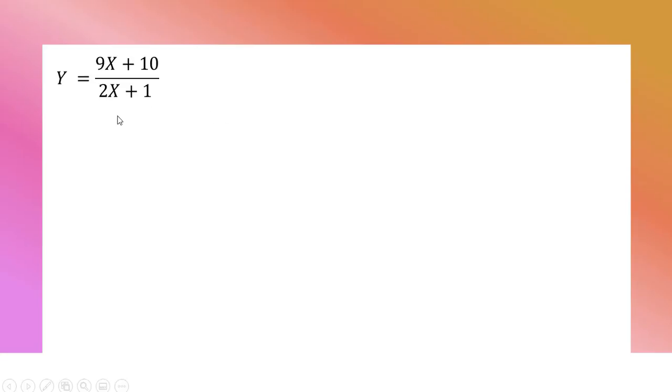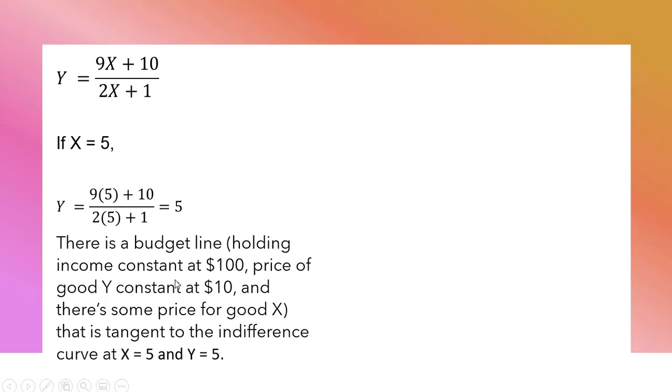So once again, our price expansion path. If X is 5, plugging that into our price expansion path, the utility-maximizing choice for good Y will be 5. In other words, there is a budget line holding income constant at $100, the price of good Y constant at $10, and there's some price for good X that is tangent to the indifference curve at X equals 5 and Y equals 5.